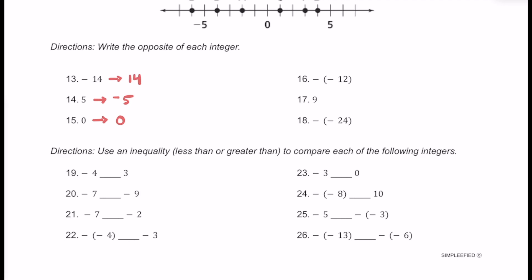For number 16, we have negative negative 12. In this case, we have 12, and then the opposite of it, and then the opposite of the opposite of 12. So this is really just going to be the same thing as 12, because the opposite of the opposite is just the regular value. So negative negative 12 equals 12, and the opposite of that would be negative 12.